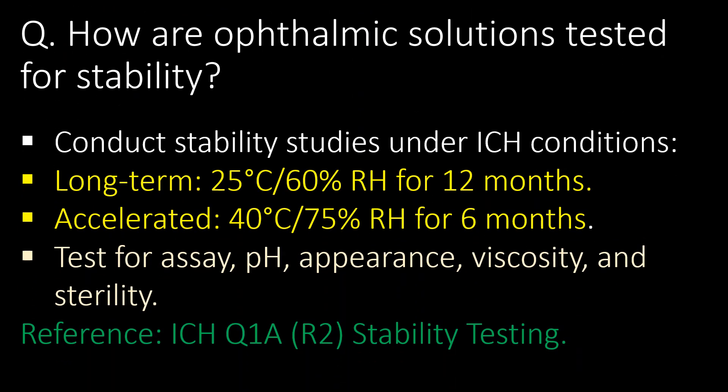How are ophthalmic solutions tested for stability? Conduct stability studies under ICH conditions: long-term at 25°C / 60% RH for 12 months, and accelerated at 40°C / 75% RH for 6 months. Test for assay, pH, appearance, viscosity, and stability. Reference guideline: ICH Q1A(R2) stability testing.